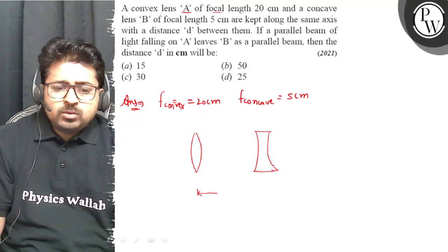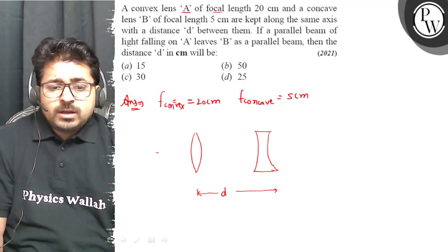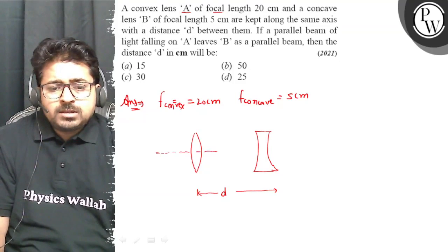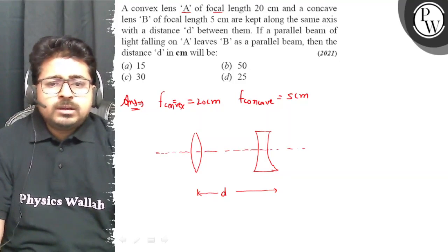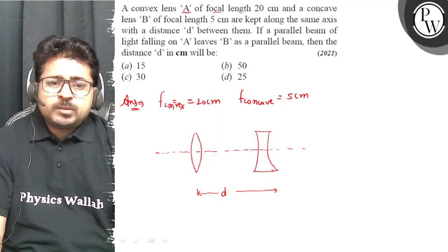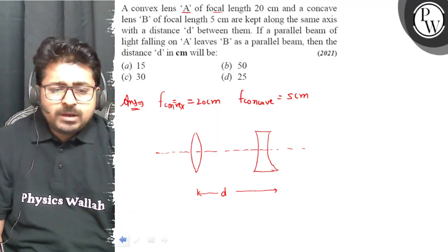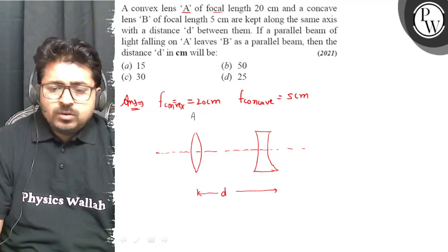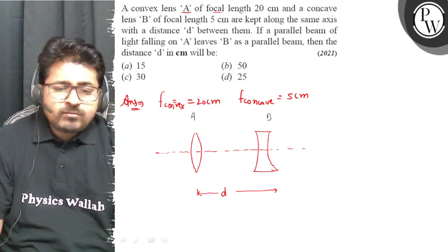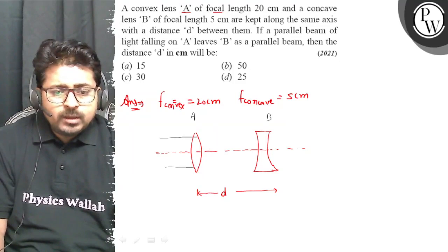The distance between them is D, placed along the principal axis as given in the question. A parallel beam of light is incident on lens A, and light rays are incident here.